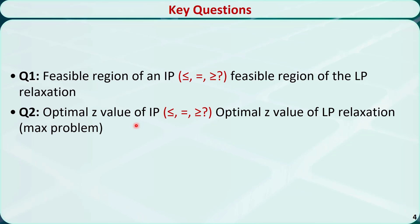Similarly, for a minimization problem, in general, the linear programming relaxation has a smaller optimal z value. This is because the feasible region is larger for the linear programming relaxation, and it has more options or a better chance to contain the smallest z value.